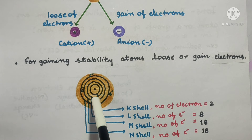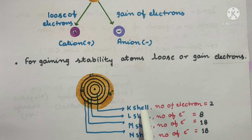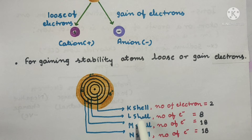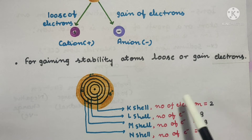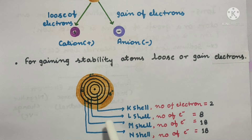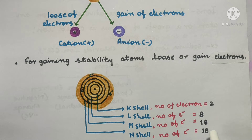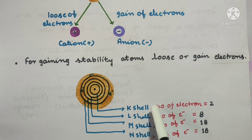The innermost shell closest to the nucleus is called the K-shell, and it can hold a maximum of 2 electrons. After that, the next shell is called the L-shell, and it can hold a maximum of 8 electrons. The next shell is the N-shell, which can hold a maximum of 18 electrons. So the shell capacities are 2, 8, and 18.